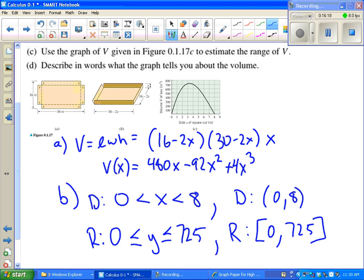Part D says describe in words what the graph tells you about the volume. It tells you a lot of things. As you get closer and closer to cutting out 0 or 8 inches, our volume looks like it's getting down low. That's called a minimum. The closer we get to, it's hard to tell just by looking, but maybe right about 3 or so, somewhere between 3 and 4 is going to give us our maximum volume, which is probably what we're going to be looking for in a real life situation. If you're making a box out of a piece of cardboard, you're going to want to make that box as big as possible.